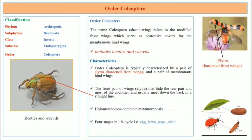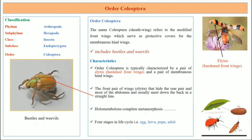Order Coleoptera. The name Coleoptera, or 'sheath wing,' refers to the modified front wings which serve as protective covers for the membranous hind wings. Order Coleoptera is typically characterized by a pair of elytra, which are the hardened front wings, and a pair of membranous hind wings.